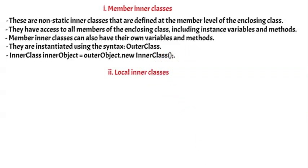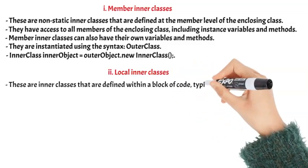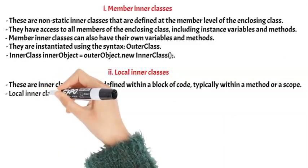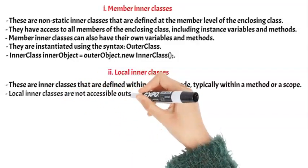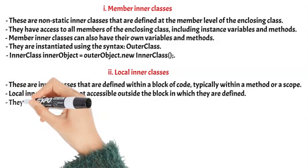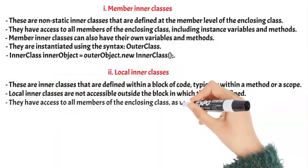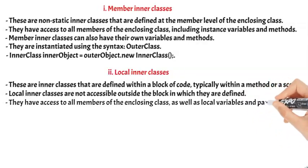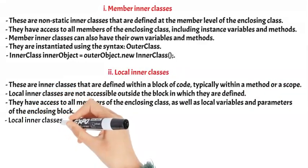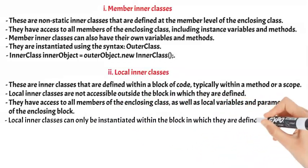2. Local Inner Classes: These are Inner Classes that are defined within a block of code, typically within a method or a scope. Local Inner Classes are not accessible outside the block in which they are defined. They have access to all members of the enclosing class, as well as local variables and parameters of the enclosing block. Local Inner Classes can only be instantiated within the block in which they are defined.